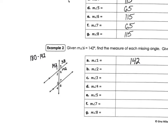To find angles two or five, we do 180 minus 142, which gives us 38. So angle five is 38, and angle two is also 38. Then using the corresponding angles method: angle three corresponds to angle one (142), angle four is 38, angle seven is 142, and angle eight is 38.